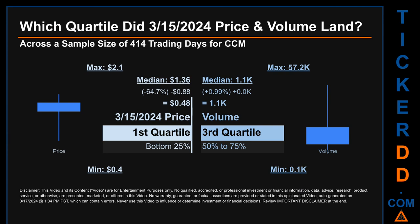Hello, my name is Maria. Which quartile did March 15, 2024 price and volume land in across a sample size of 414 trading days? The maximum end of day price for CCM was $2.10 while the minimum was 40 cents. Within that price range, March 15, 2024's price of 48 cents landed within the first quartile, meaning it was within the bottom 25% of all sampled end of day prices. The day's volume landed within the third quartile, within the 50 to 75% range of all sampled daily volume.